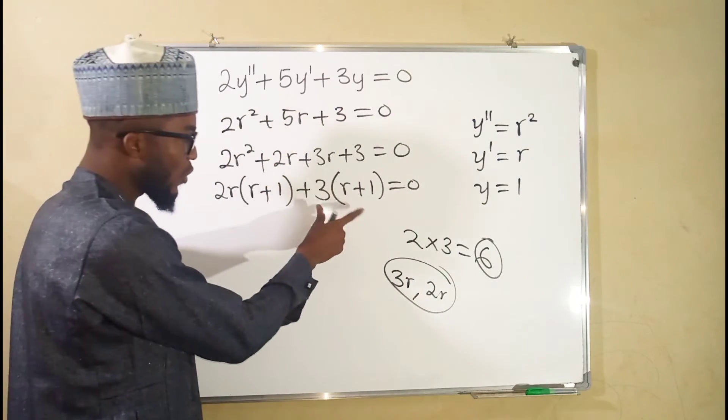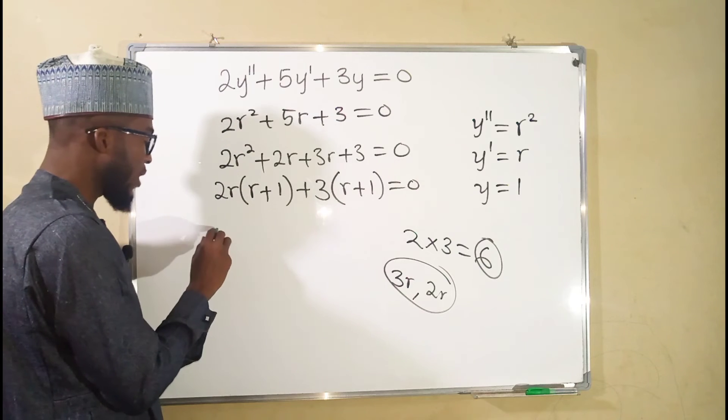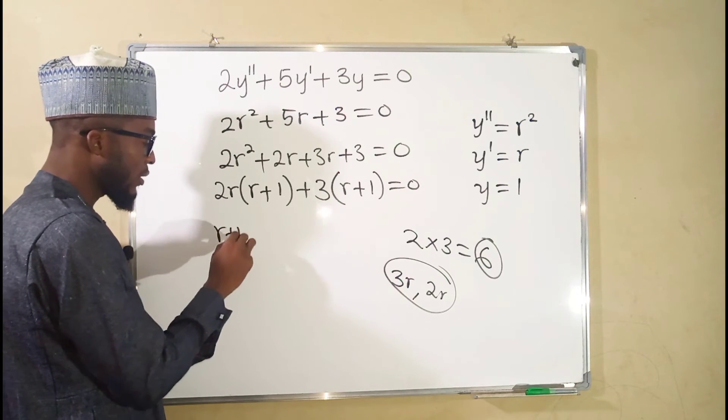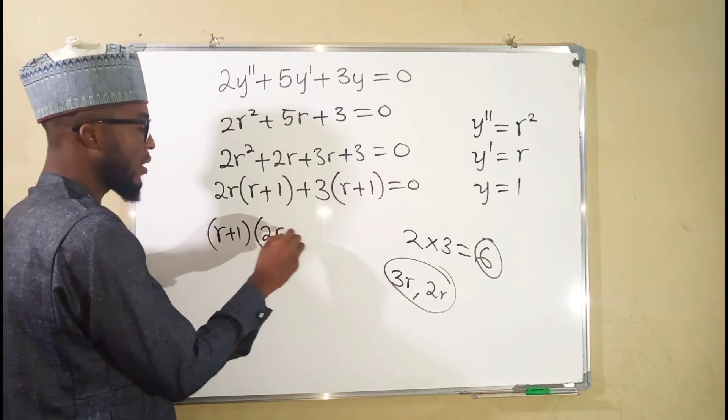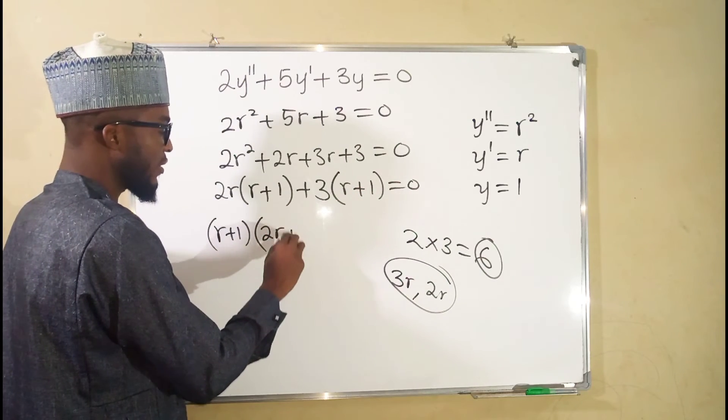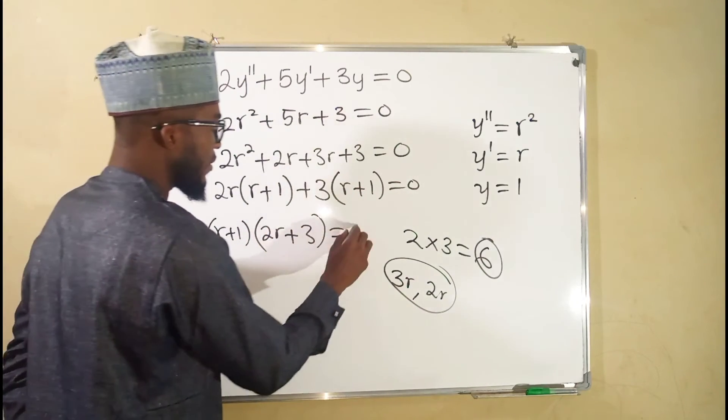Still we have r plus 1 in between these two terms, so we factor it out. r plus 1, what is left here is 2r, and what is left here is 3, plus 3. The whole of this is equal to 0.